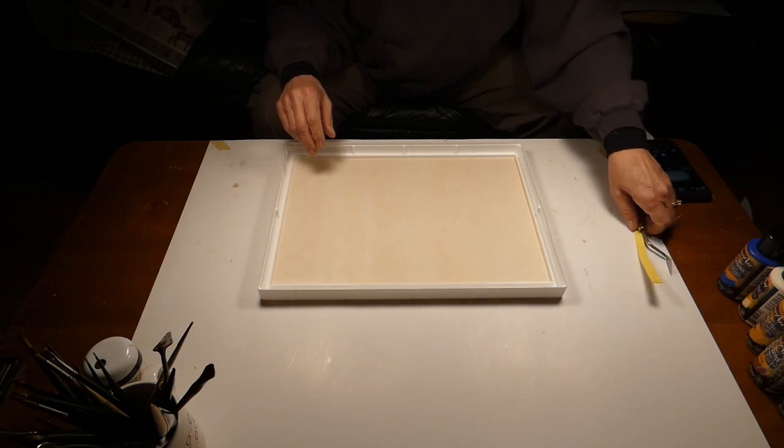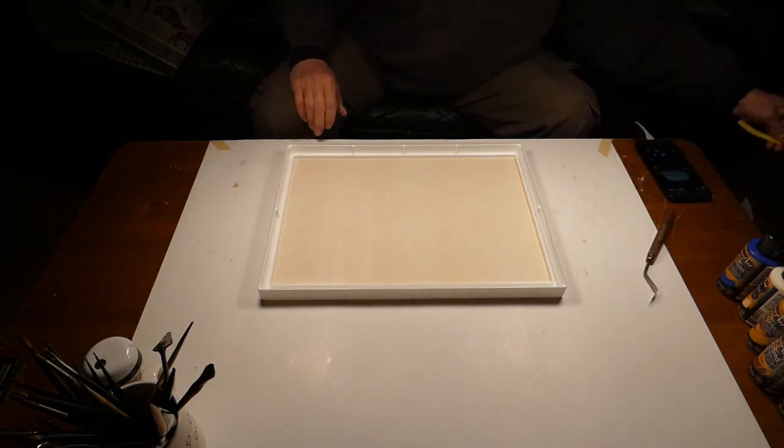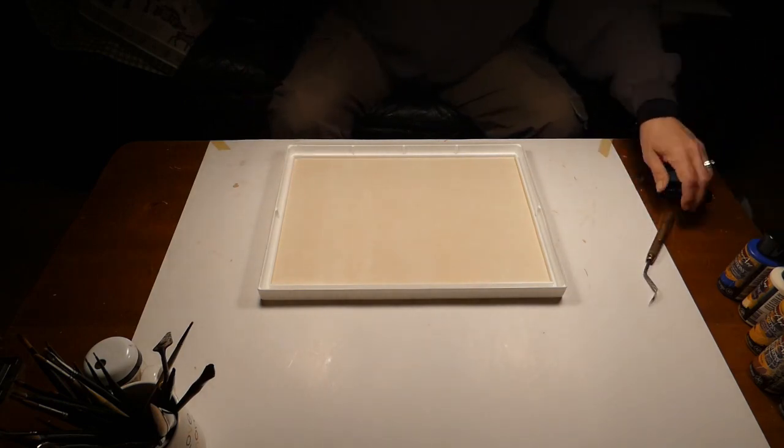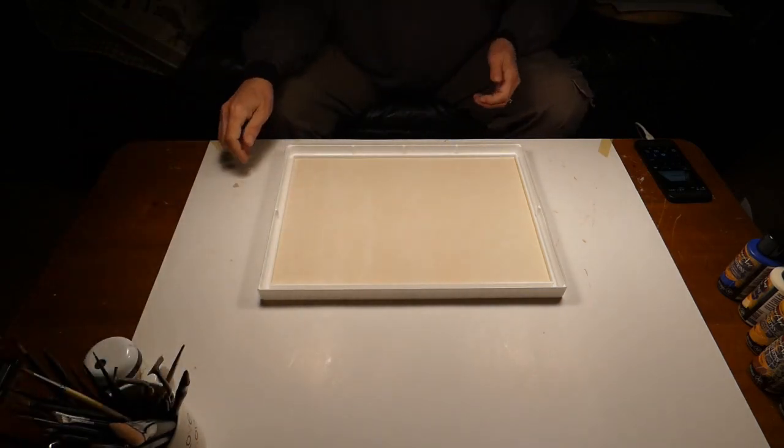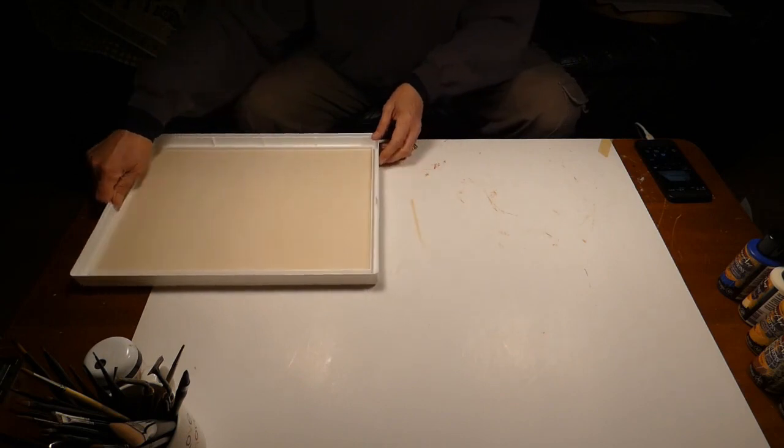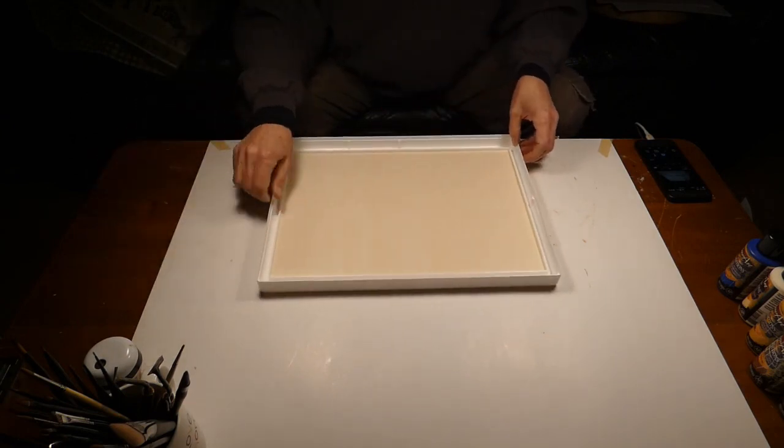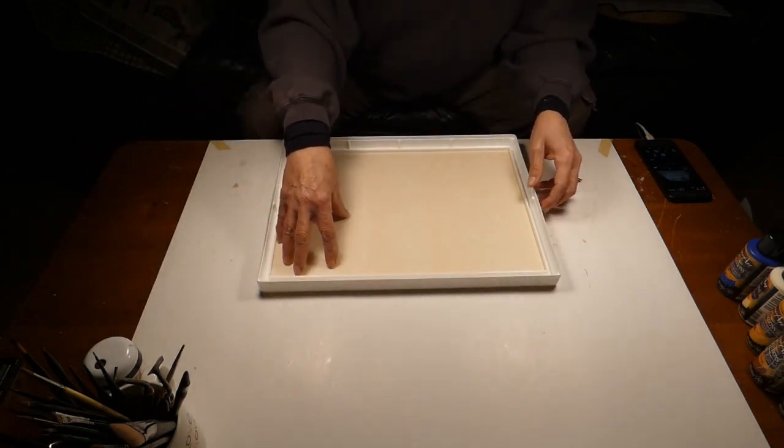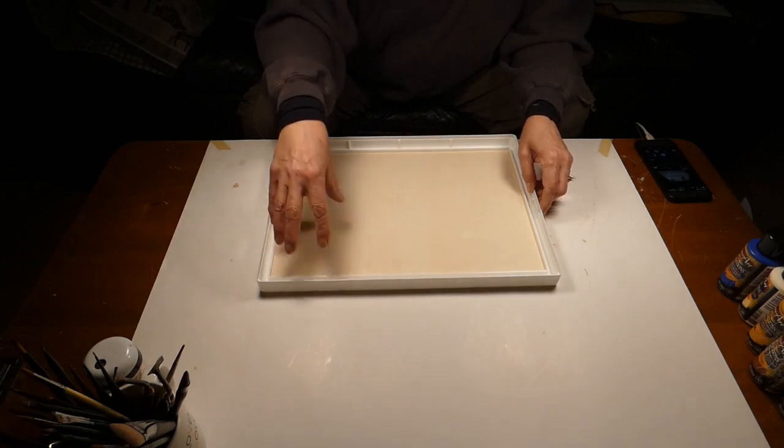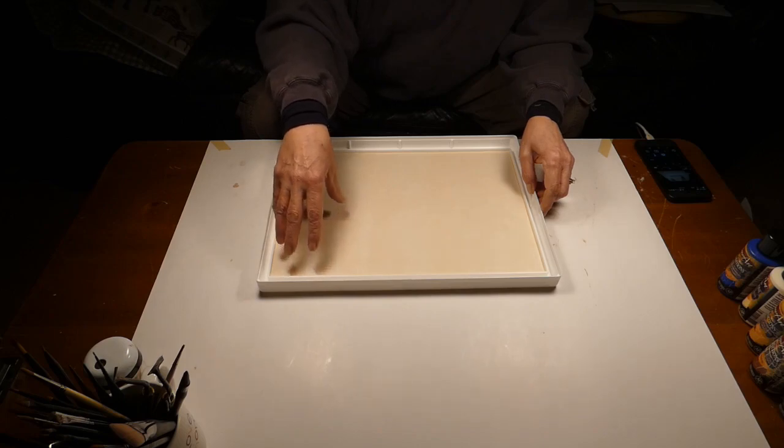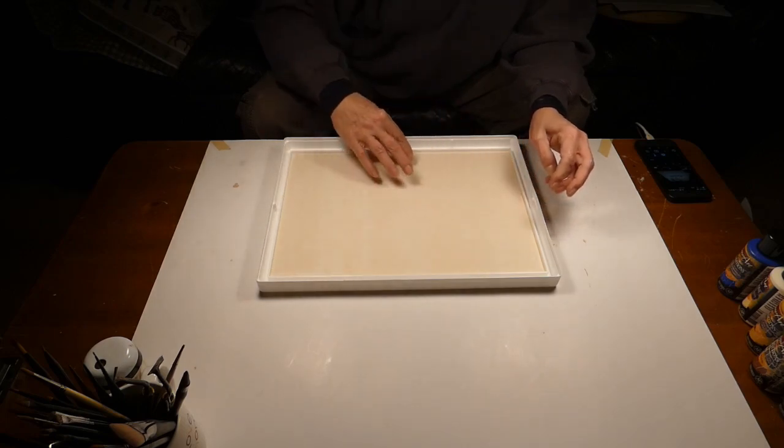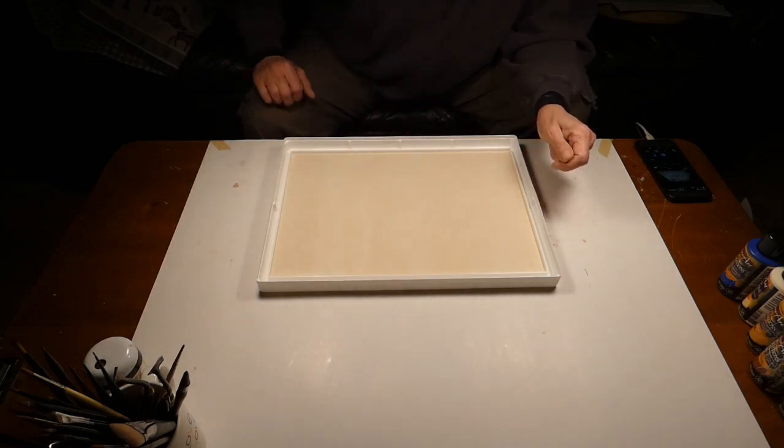So I think what I'll do is use a portion of this, let's say this corner here, to put my water bowl, and then I'll have my paint around it on the palette itself. I'll have to see how that works.